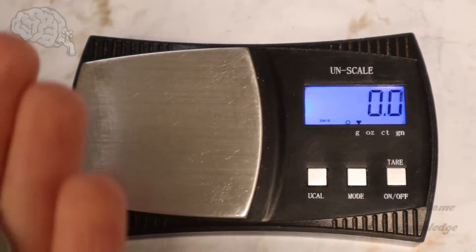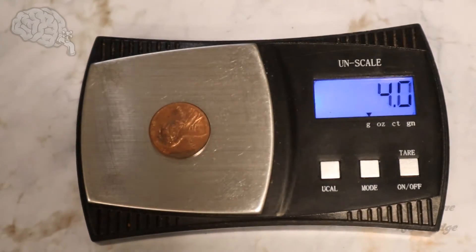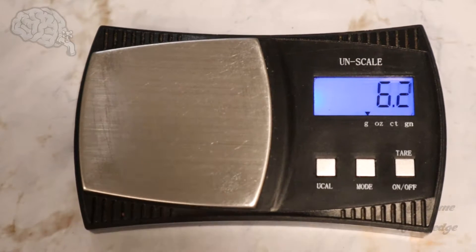That's just gonna be the most accurate. So we're gonna start with the penny, of course, which should be 2.5 grams. There we go. We got the 2.5 grams there. We're gonna go ahead and take that off.